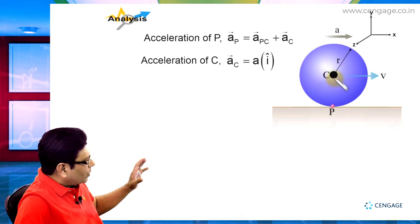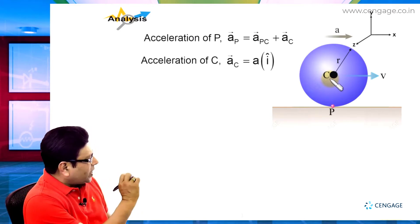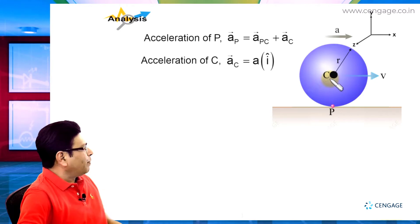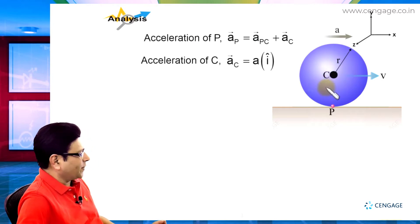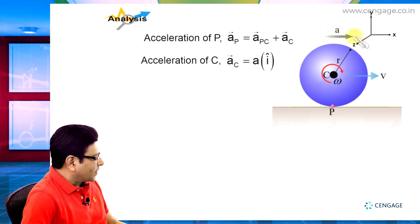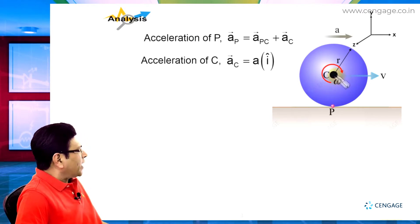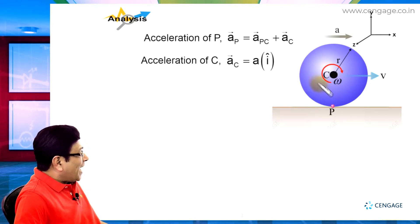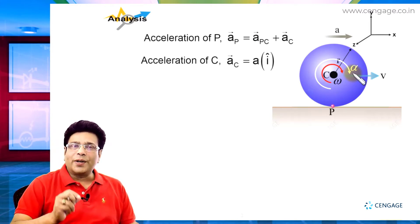Again consider the motion of the disk. Rolling means point P is not sliding. If point P is not sliding, the rotation sense of the disk with respect to C should be clockwise, so the angular velocity is clockwise. Since the centre is accelerating, v is increasing with time, meaning omega also increases with time. For omega to increase, the angular acceleration alpha must be in the same sense as omega — so this is the direction of alpha.